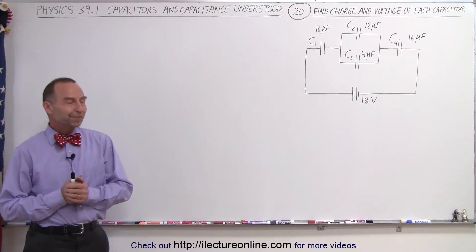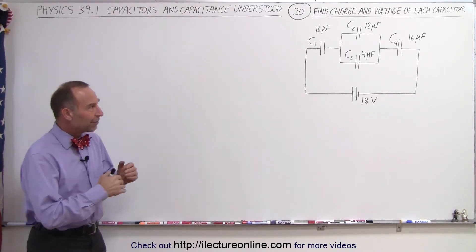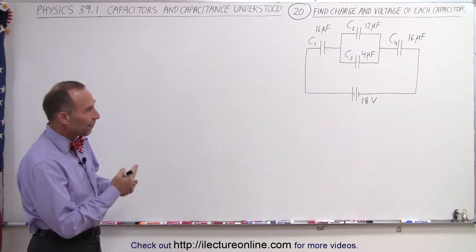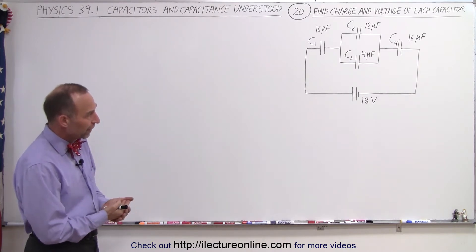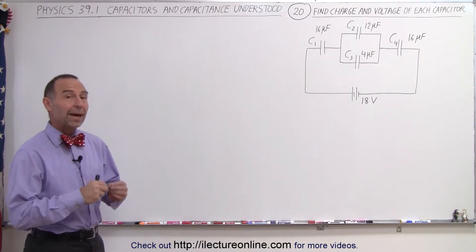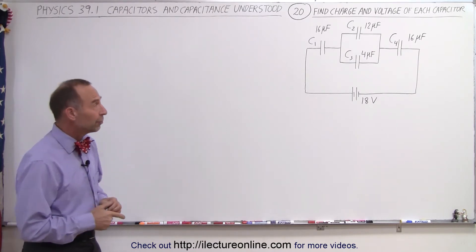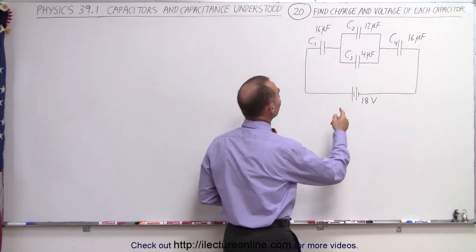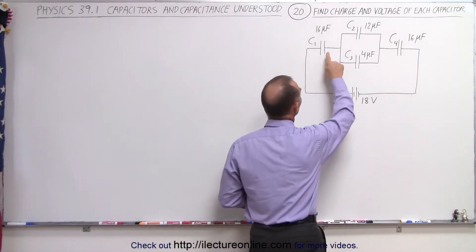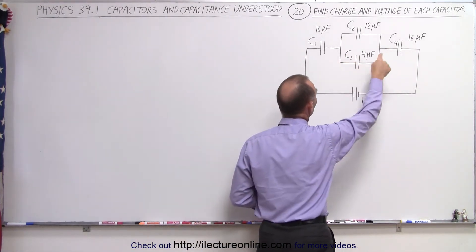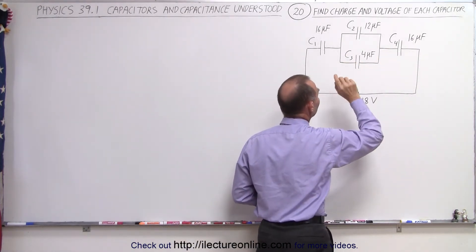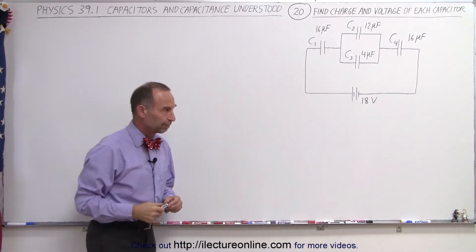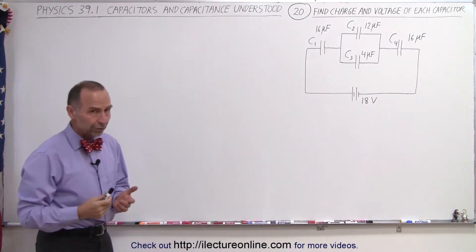Welcome to our lecture online. Here we have another circuit that has a number of capacitors on it — in this case four of them — connected to an 18-volt battery. What we're trying to do here is find the charge on each of the four capacitors and the voltage across each of the four capacitors. How do you do that?